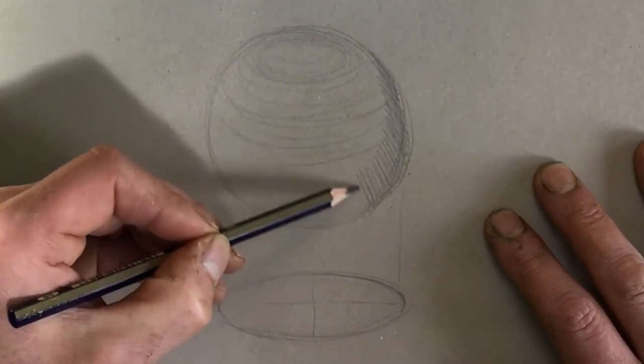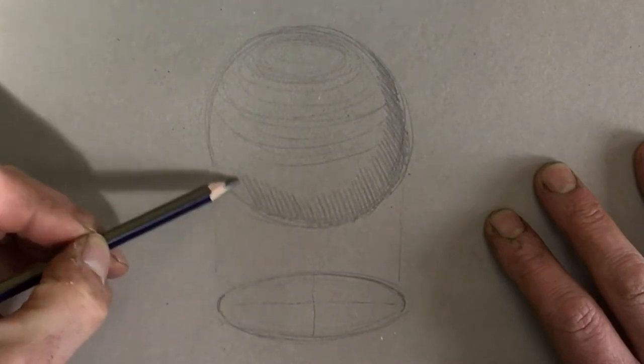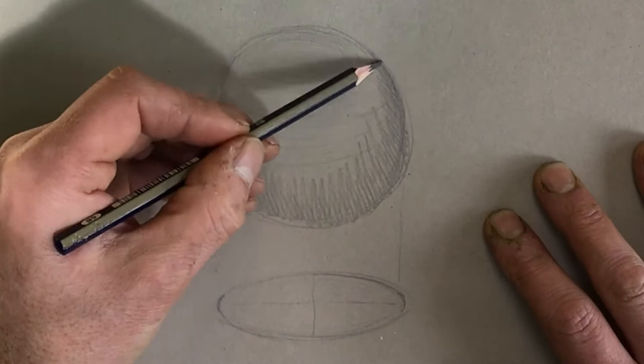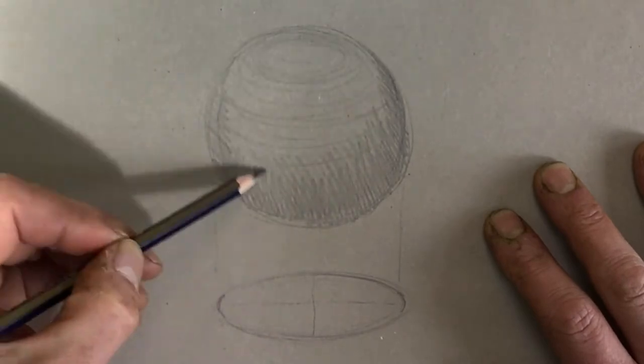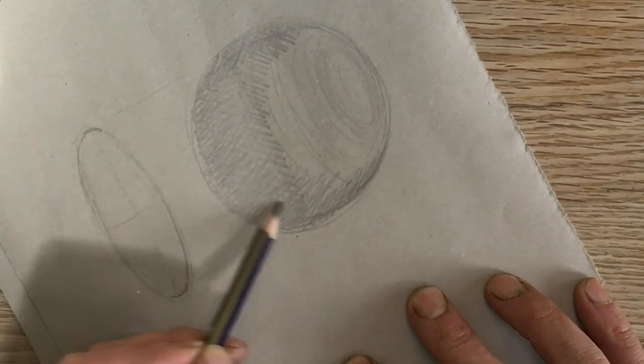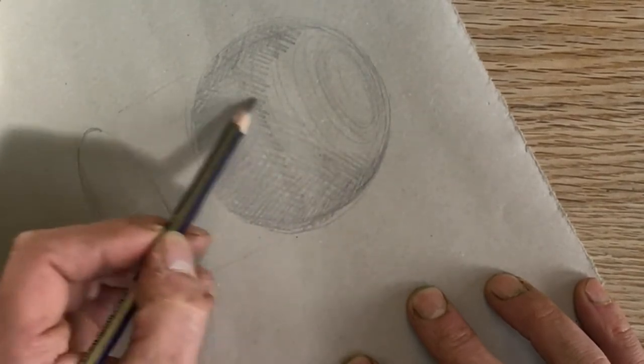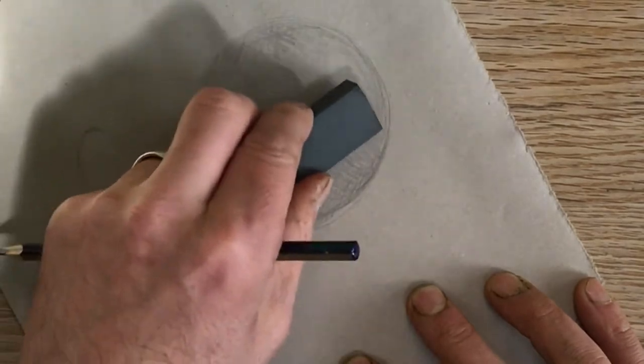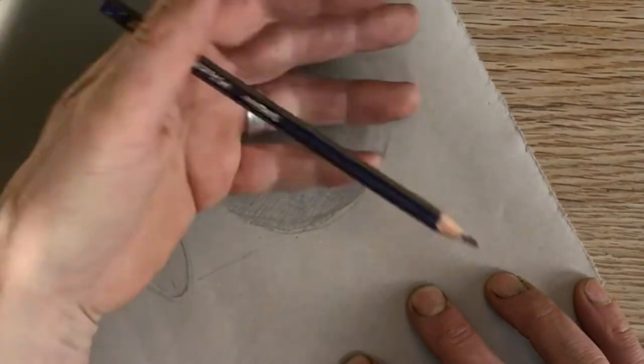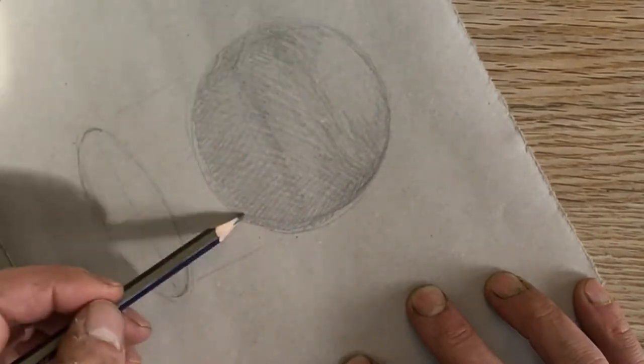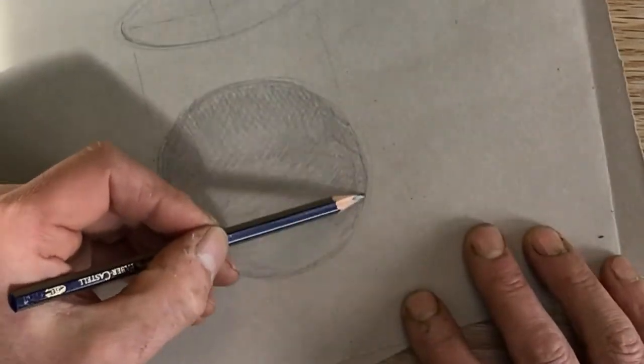Now, our tones we're going to build up in layers. We can sketch quite roughly at this stage. Take note of where I'm holding the pencil, at least halfway up. You can control the pressure much easier this way. And your tones just build in layers. As you get confident with the spherical shape, you can rub out some of those construction lines.